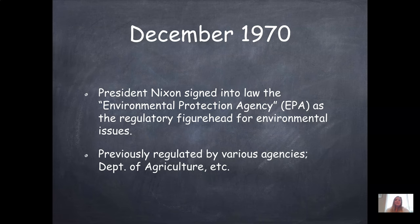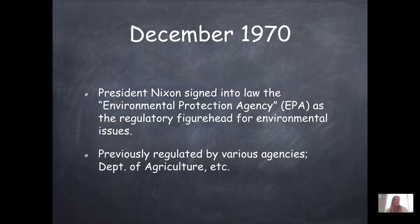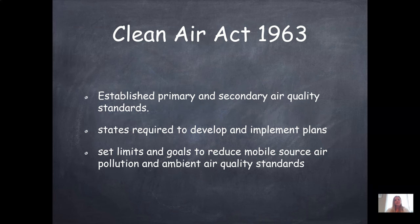In December 1970, the EPA was finally signed into law by President Nixon. It is the regulatory figurehead for any environmental issue — a federal agency covering the entire United States. Previously, environmental regulation fell under the Department of Agriculture, but now it has its own agenda, since agriculture doesn't necessarily have the environment at the forefront — their primary purpose is to provide crops and food for the United States.